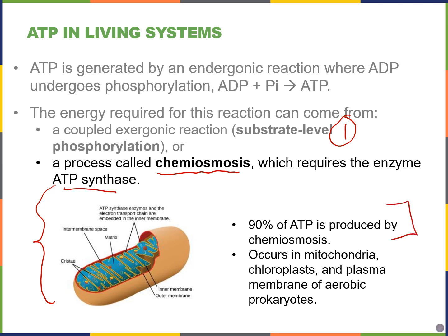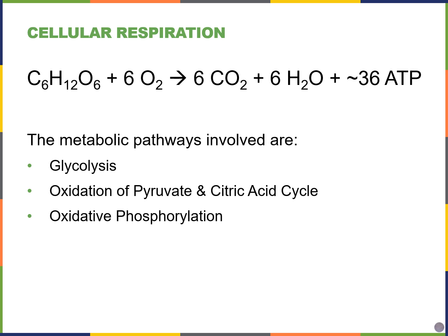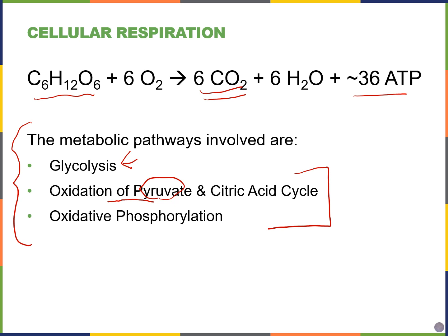In eukaryotes, chemiosmosis happens in the mitochondria for animal and human cells. In plants it also happens in the chloroplasts, and in prokaryotic cells it occurs at the plasma membrane since they don't have mitochondria or chloroplasts. We're going to look at the oxidation of glucose into carbon dioxide and generation of ATP during cellular respiration by examining the different metabolic pathways: glycolysis always comes first, and if oxygen is available, the next steps are oxidation of pyruvate, the citric acid cycle, and oxidative phosphorylation.